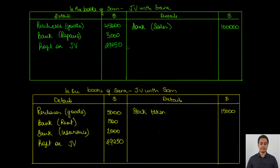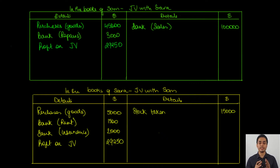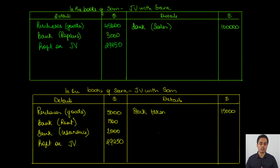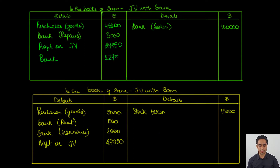Now let's calculate the balance left in the joint venture account in the books of both co-venturers. In the books of SOM, the credit side totals $100,000 and the debit side totals $77,250, leaving a credit balance of $22,750. Since this is a credit balance in SOM's books, it is an amount SOM has to pay back to SARA. On the debit side, we record this remittance of $22,750 so that the account is closed and both sides total $100,000.